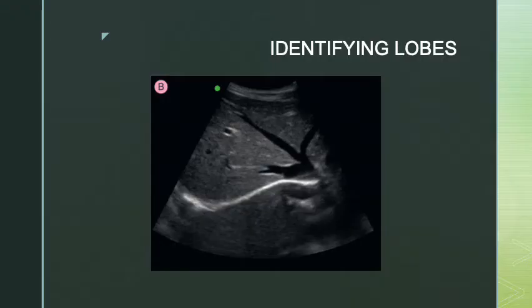Now we're going to go through some images and practice identifying our lobes. The more you do it, the better you'll get. This is a transverse image of the liver at the superior portion. I know that because I have my hepatic veins draining into my inferior vena cava.